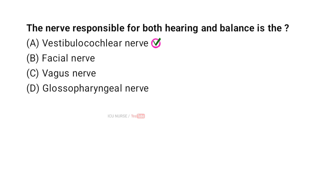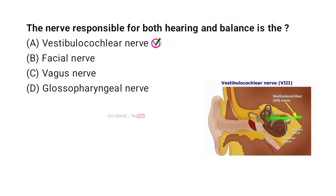The nerve responsible for both hearing and balance is the vestibulocochlear nerve. It is the eighth cranial nerve and has two main parts. The cochlear nerve carries sound signals from the inner ear to the brain, allowing us to hear.